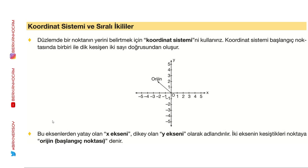Düzlemde bir noktanın yerini belirtmek için koordinat sistemini kullanıyoruz. Koordinat sistemi, başlangıç noktası birbiriyle dik kesişen iki sayı doğrusundan oluşur. Başlangıç noktasına ne diyoruz? Orijin noktası diyoruz. Bu eksenlerden yatay olanına x ekseni, dikey olanına y ekseni diyoruz. X'in diğer adı absis, y'nin diğer adı ordinattır. Orijin zaten başlangıç noktası olduğunu söylemiştik.